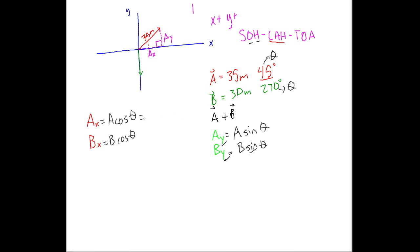So if we do this calculation, making sure our calculator is in degree mode, we would go 35 times the cosine of 45. That gives us 24.7 meters. To find Bx, I go 30 cosine of 270 and I get 0. Now, why did I get 0 for B? If you look at vector B, it is going straight down. There is no lateral movement at all with vector B. So it makes sense that b's x component is 0.